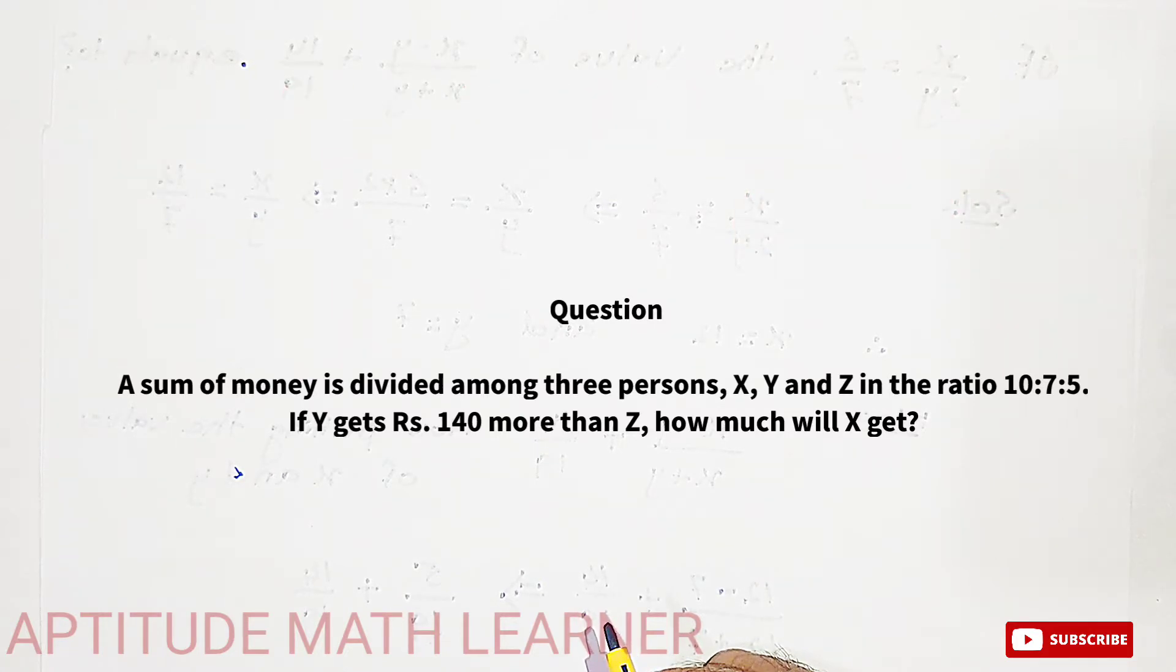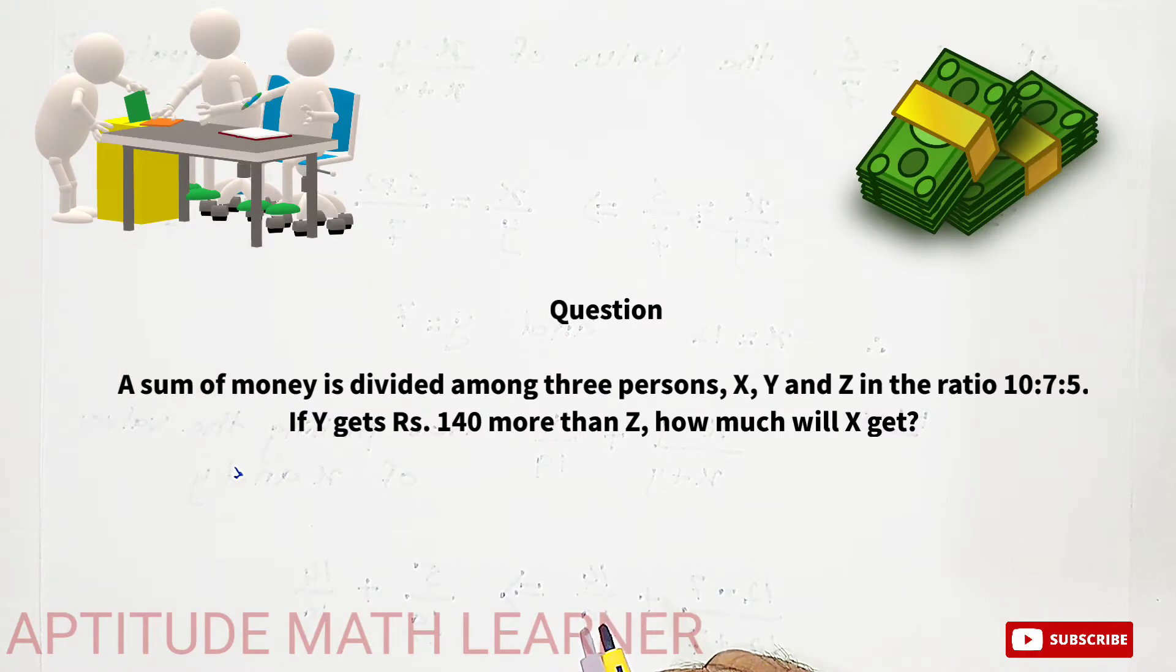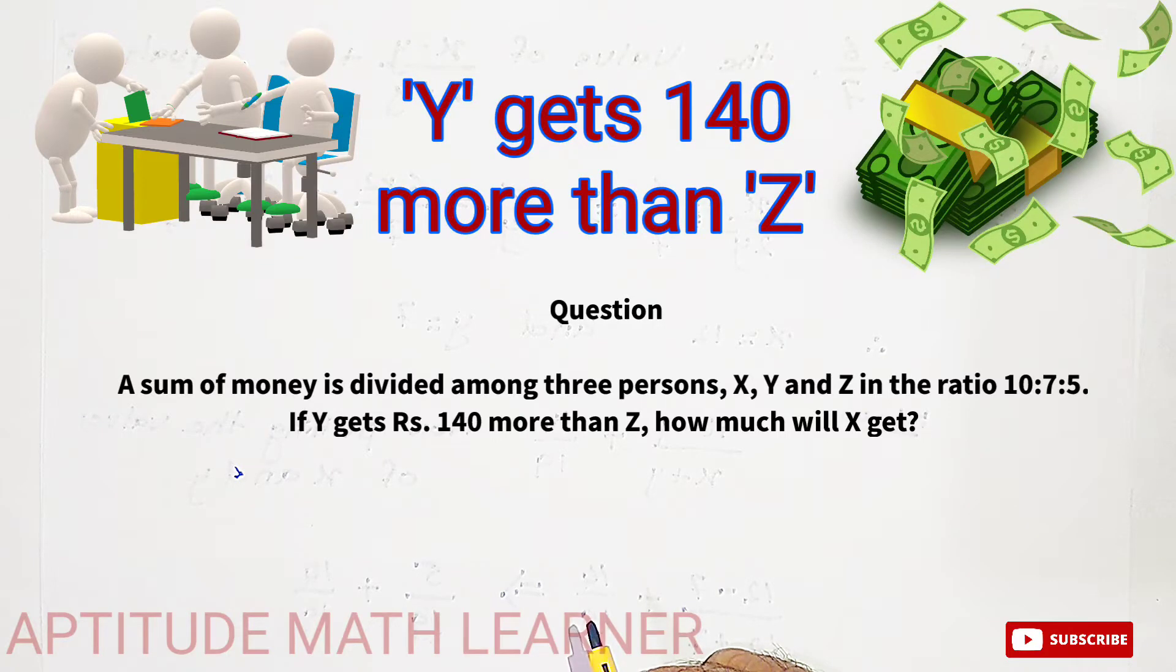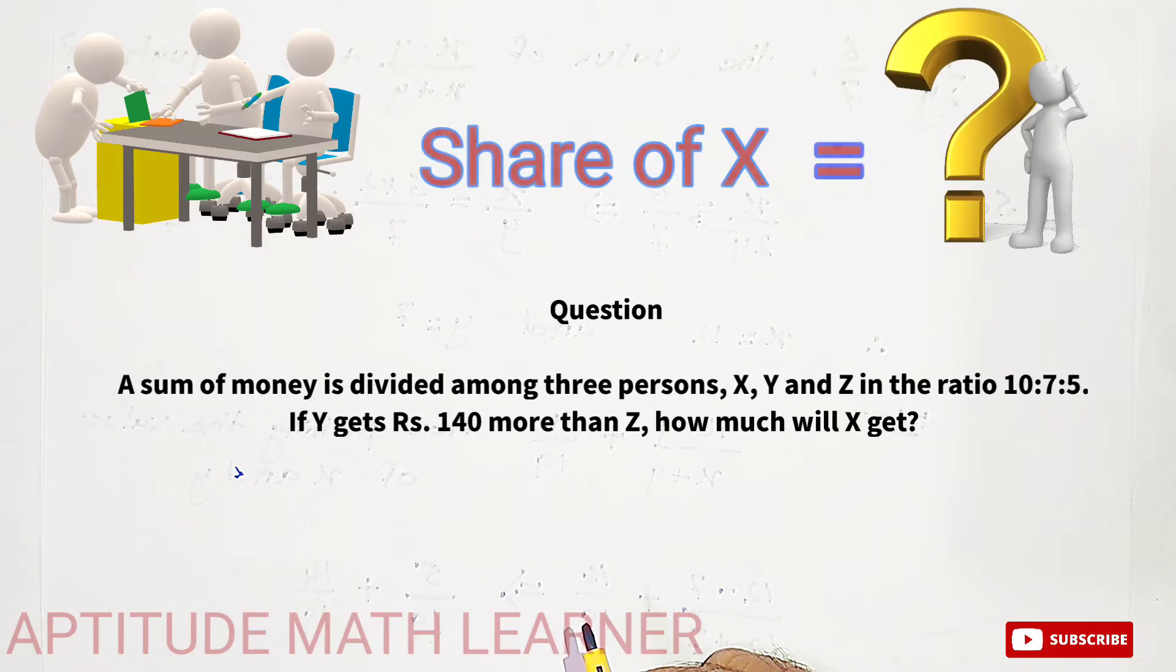The question today is: a sum of money is divided among three persons X, Y, and Z in the ratio 10:7:5. If Y gets Rs. 140 more than Z, how much will X get? We have to find out the share of X.